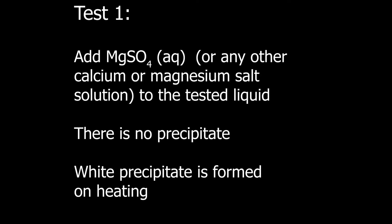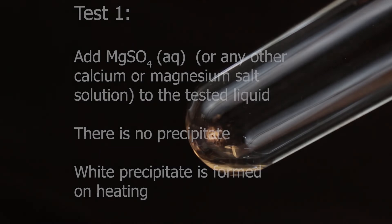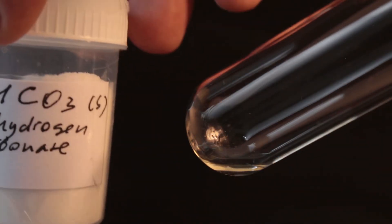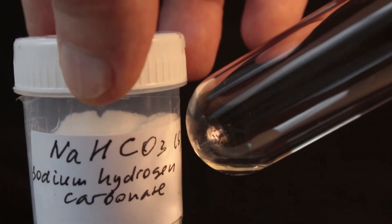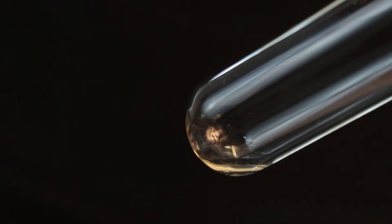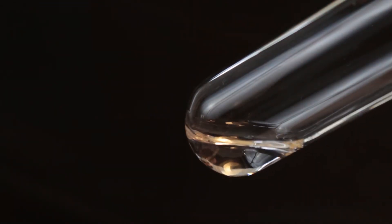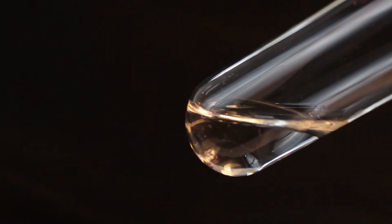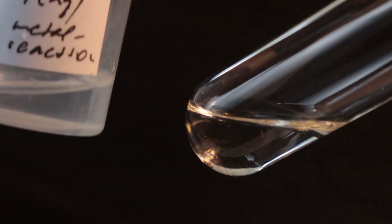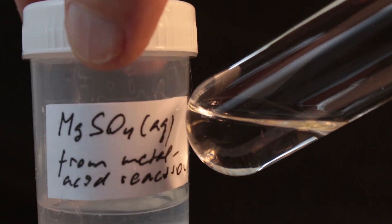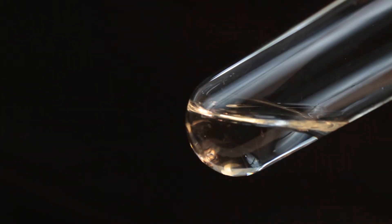First we add magnesium sulfate to the tested solution, which should remain clear. Though white precipitate should appear on heating. Here for the positive result we use sodium hydrogen carbonate. Adding few drops of magnesium sulfate. Color shouldn't change, no precipitate should appear. This is the part of the test.